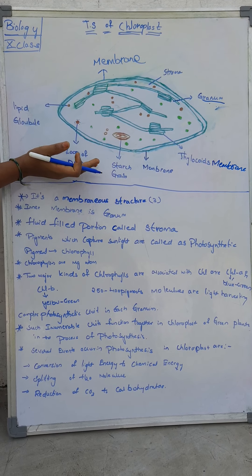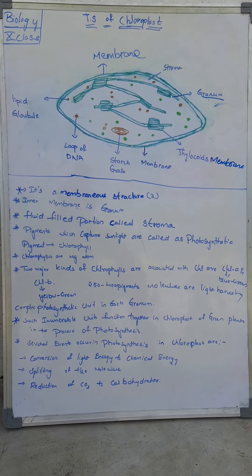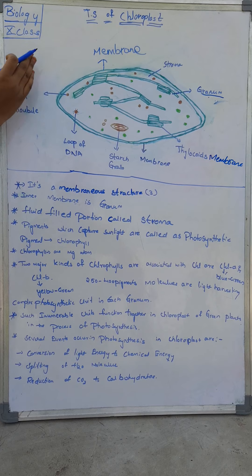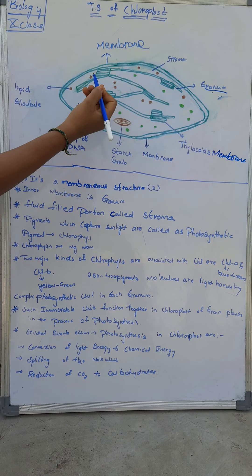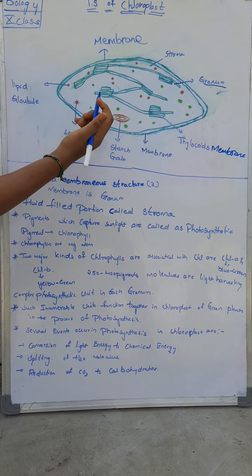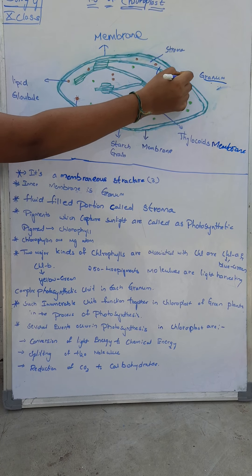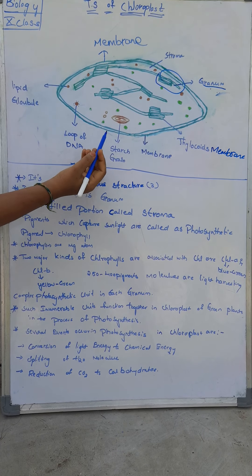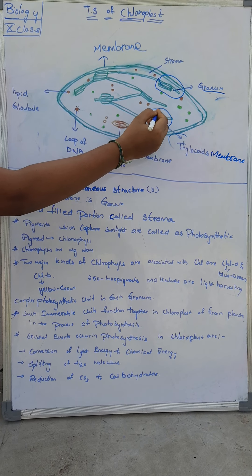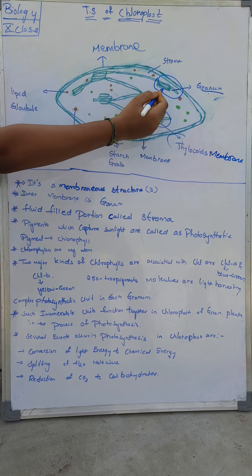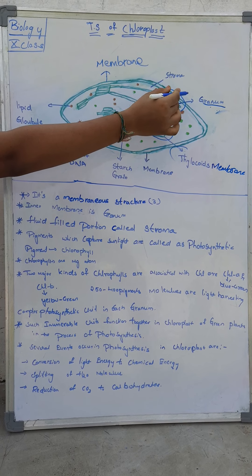When we cut the transverse section of the chloroplast, this is the structure we see. Let's discuss the parts of the chloroplast. It consists of three membranes. The innermost one is called the granum, and the granum consists of thylakoids.